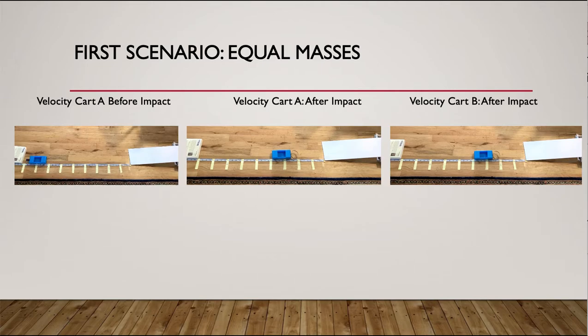So the first one we're going to do is the velocity of cart A before impact. You take cart B out of the thing entirely. You run cart A down the track and you time from when it passes the starting mark to when it passes the ending mark. And that's going to be 50 centimeters. So whatever the time is, you're going to do 50 centimeters divided by that time to get its velocity.